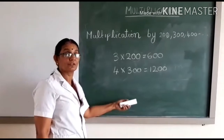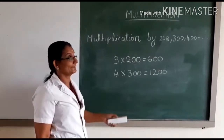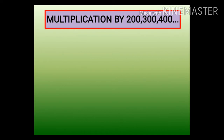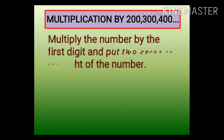So you can easily multiply numbers with multiples of 100. Now let us learn how to multiply a number by multiples of 100 — that means multiplication by 200, 300, 400, and so on. What we have to do is multiply the number by the first digit and put two zeros to the right of the number.